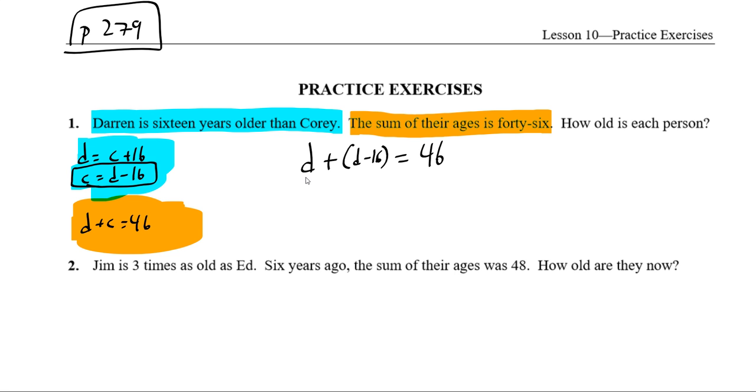Now I've only got that same variable. I've only got Darren and Darren. Only one variable. That means I can solve this. So I'm going to collect like terms. I'm going to throw the Darren variables over here, and I'm going to put the numbers, the constants, over here. On the left, I've got two of those Ds. One there and one there. And on the right, I've got 46. I'm going to move the 16 over. It was negative, it'll become positive.